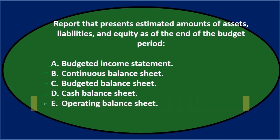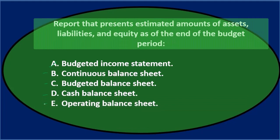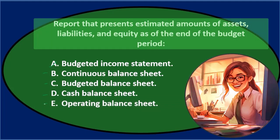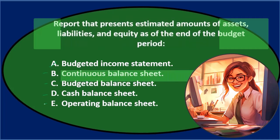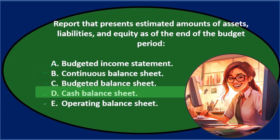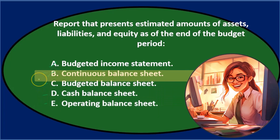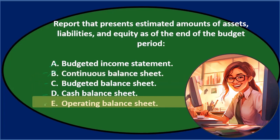Let's go through it again. The report presents estimated amounts of assets, liabilities, and equity as of the end of the budget period. Of the remaining choices — continuous balance sheet, budgeted balance sheet, cash balance sheet, and operating balance sheet — continuous balance sheet doesn't sound right. And of the other three, operating balance sheet kind of sounds like maybe the normal operating-type balance sheet, maybe not.